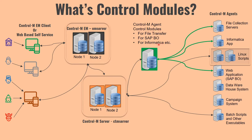The control module is where you do all the connection-related settings for connecting to Informatica. For example, when you install the control module for Informatica, you go to Control M Configuration Manager and set up the connection string — defining the URL for Informatica and the username and password required to log in. This information will be different for each type of control module because it depends on the application you are connecting to.